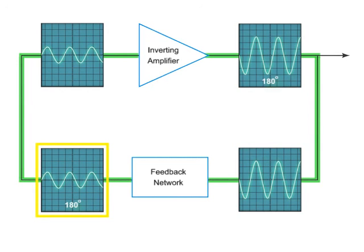Also note that the output of the feedback network is now in phase with the original input of the inverting amplifier. Remember that the feedback network is frequency selective. Therefore, you only get one signal that will arrive back in phase.